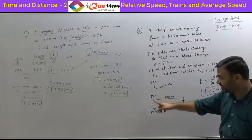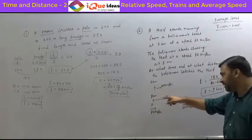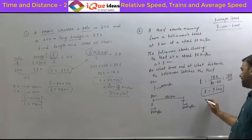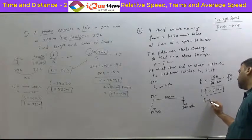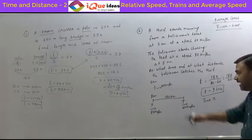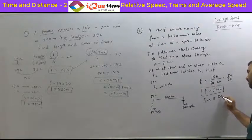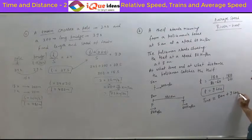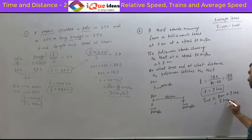The policeman has started chasing at 8 a.m., and after that he takes 9 hours. So the time of capture is 8 a.m. plus 9 hours, which becomes 17:00, that is 5 p.m. So the thief will be caught at 5 p.m.